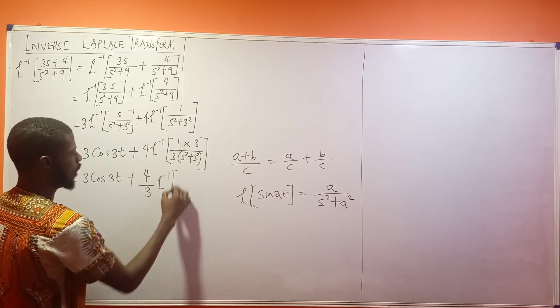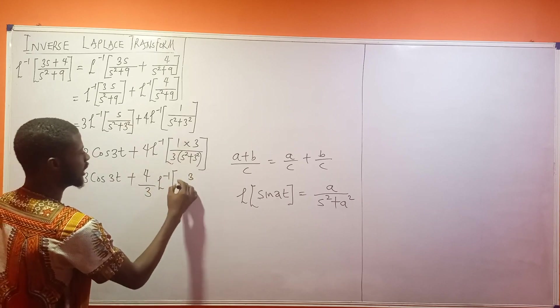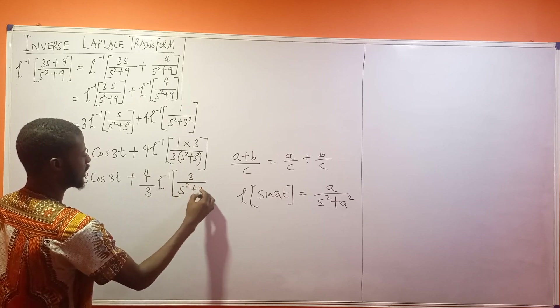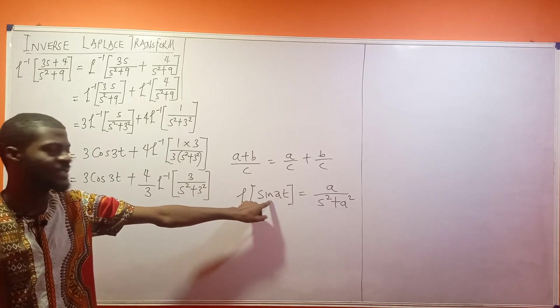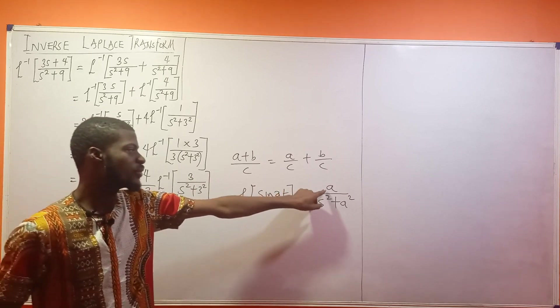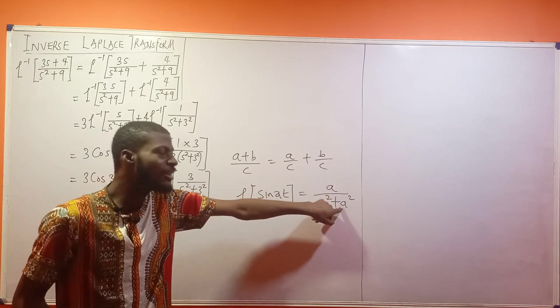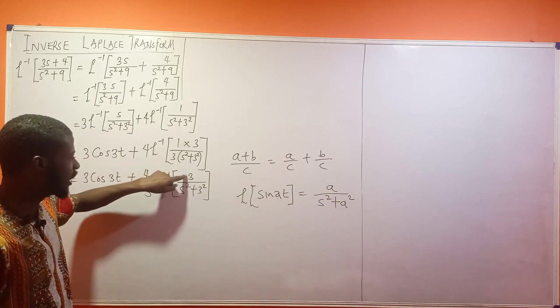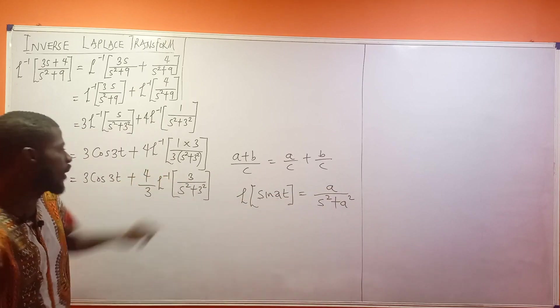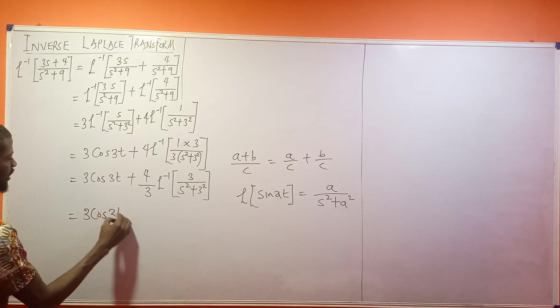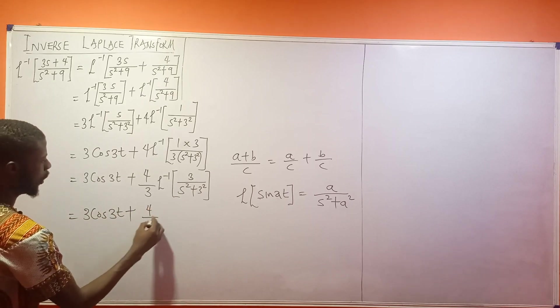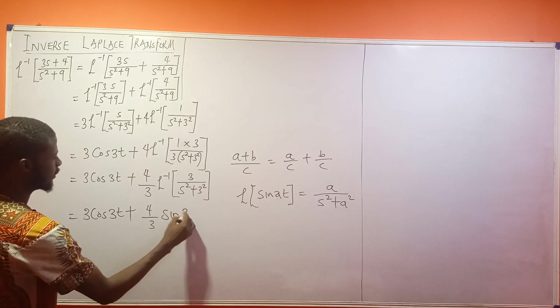Inverse Laplace of, what will be left here? 3 over s squared plus 3 squared. What is this looking like right now? It's now looking like sine at. Because we have a number divided by s squared plus that number squared. Final answer for this is 3 cos 3t plus 4 all over 3 sine 3t.